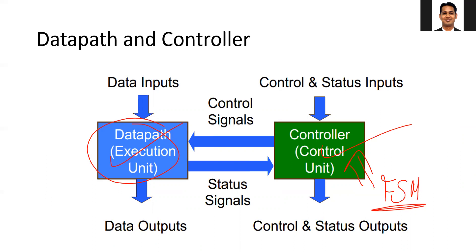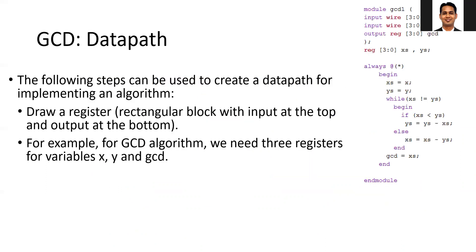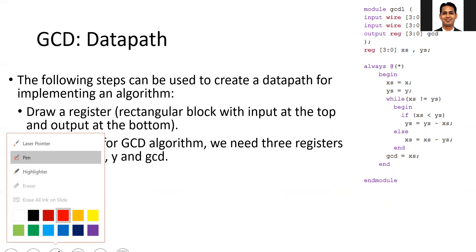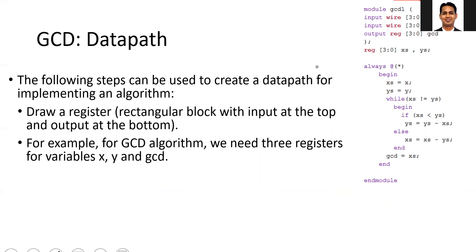The first thing is that you need to be aware of what algorithm you are going to implement. For the GCD, we have already discussed the algorithm we would like to implement. In this algorithm, we compare the larger number with the smaller number. We subtract the larger number from the smaller number and replace the larger number with the difference between the two. We continue this step until both numbers are equal.